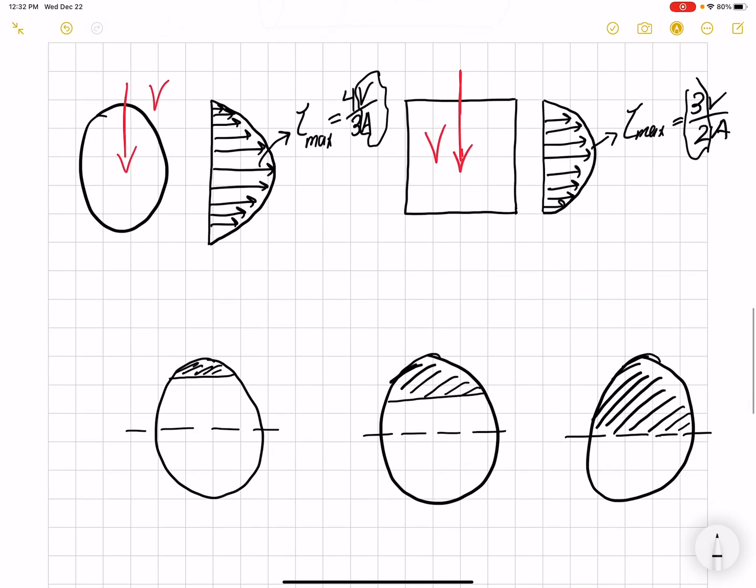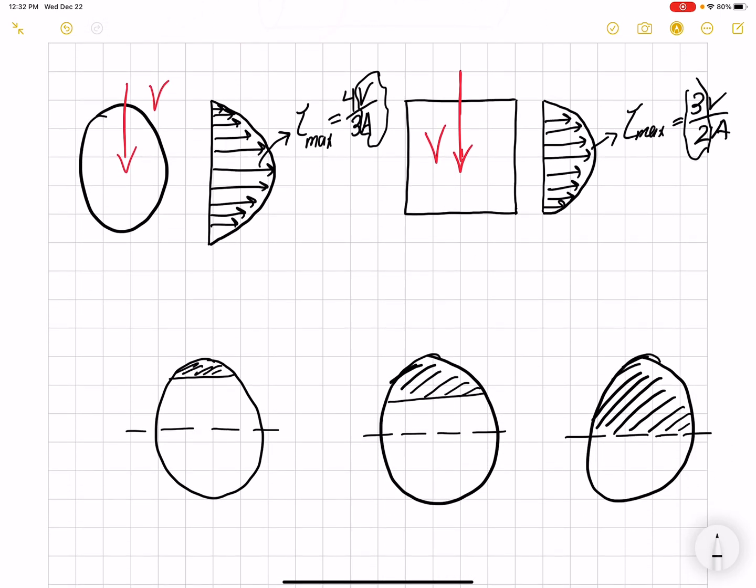But when you're calculating the shear stress at any location, you need to remember that if we are interested in finding the shear stress here, we need to use this area. And then find a centroid of that area with respect to our coordinate system. That would be our Y bar. And if you're interested in finding it in this location, then that would be the area that we use in our equation, and then we find a centroid of our desired area.